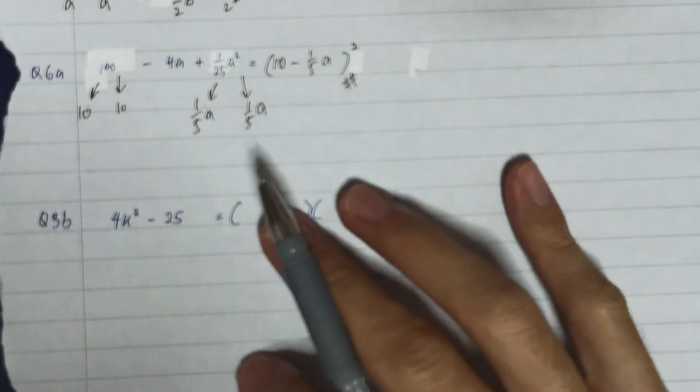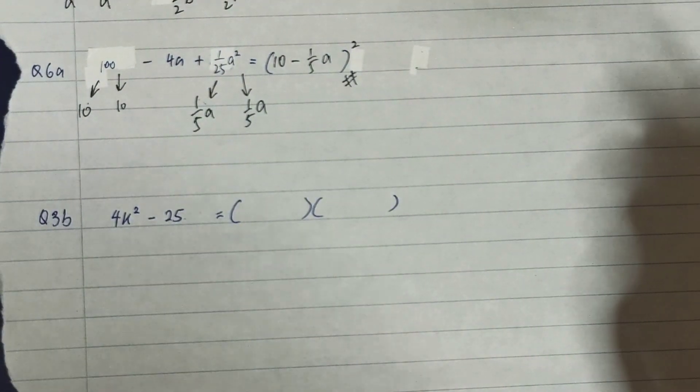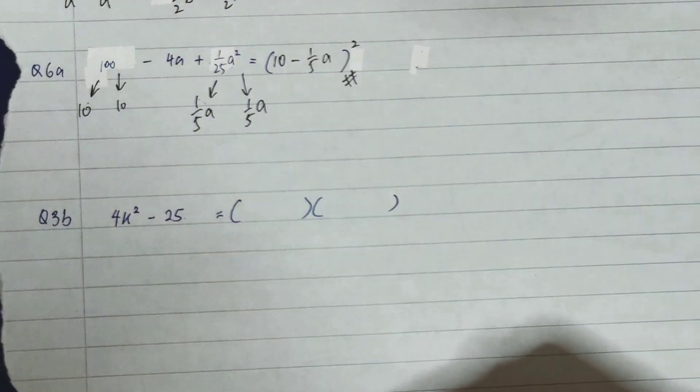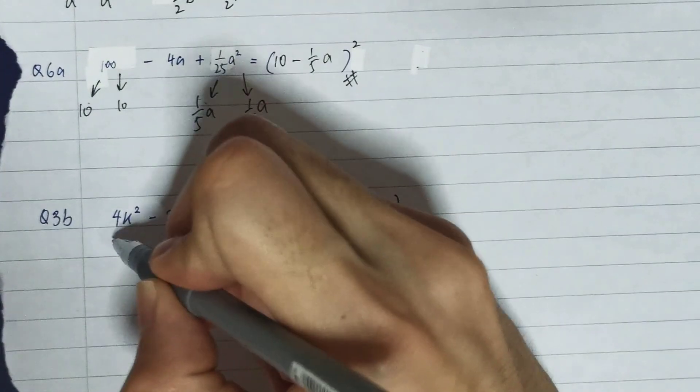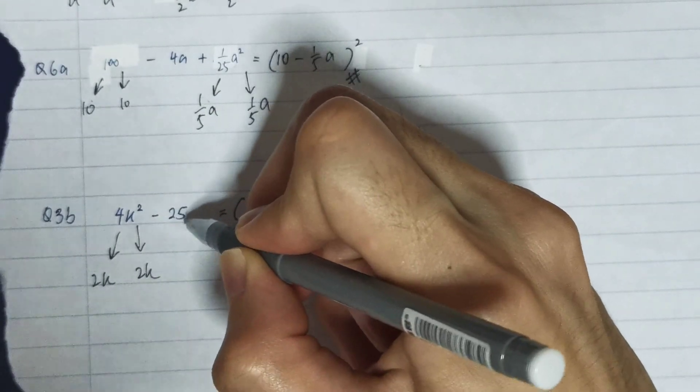Because that's the only way that we can factorize it when we have only two terms. Or if they have some common factor, you can actually pull it out. So for 4k², it will be made out of 2k times 2k.